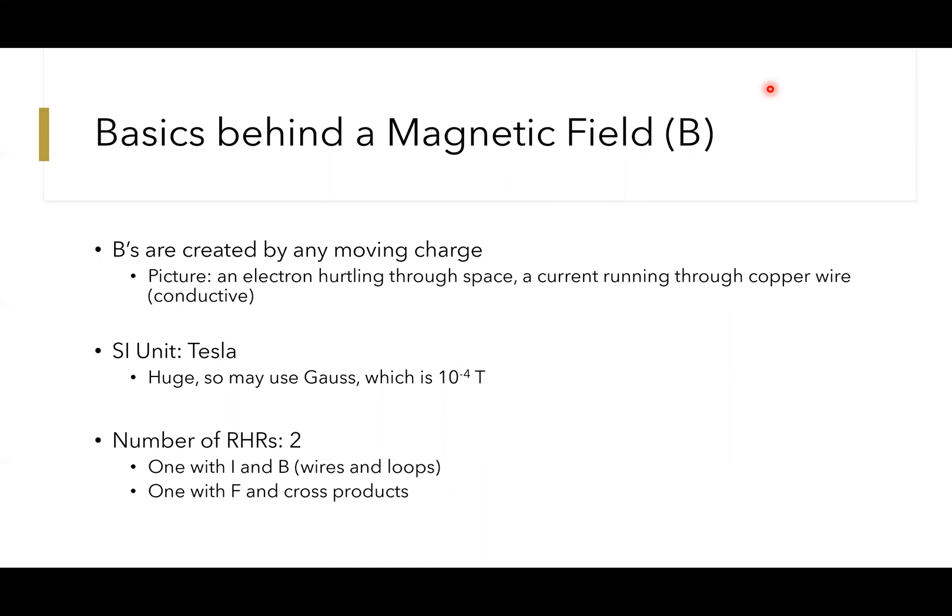The unit for a magnetic field is the Tesla. A good thing to keep in mind is that one Tesla is huge—think Elon Musk, the company Tesla—so you're very rarely going to see magnetic fields of that size. You might see the intermediary unit Gauss, which is 10 to the minus 4 Tesla instead.